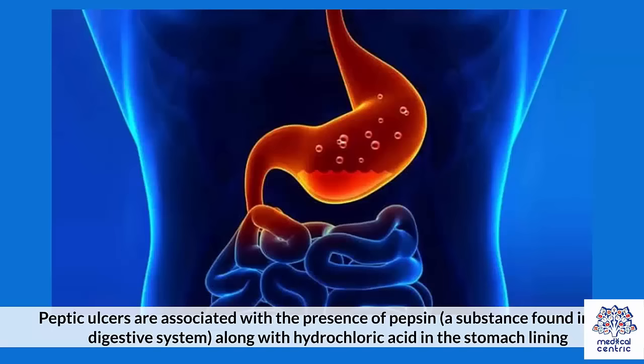Peptic ulcers are associated with the presence of pepsin, a substance found in the digestive system, along with hydrochloric acid in the stomach lining.